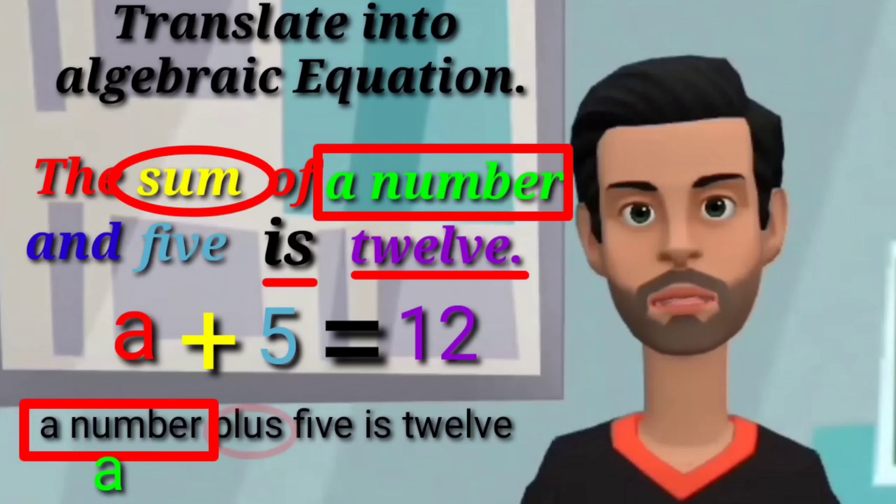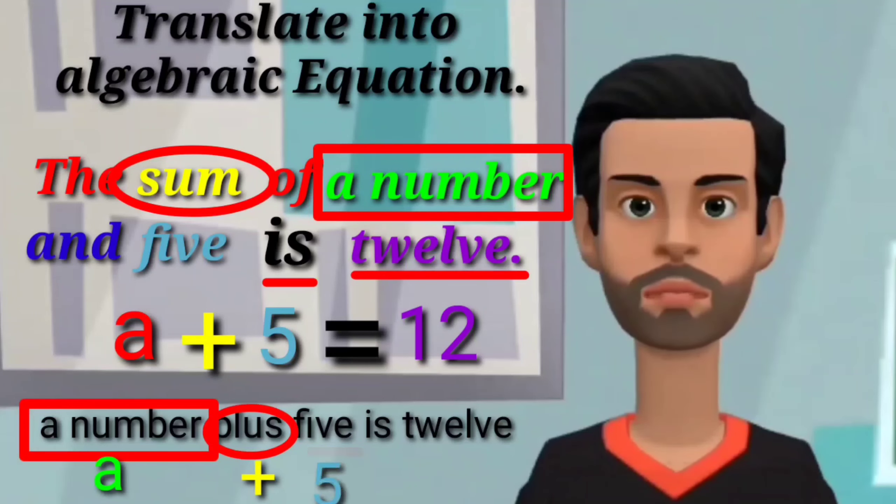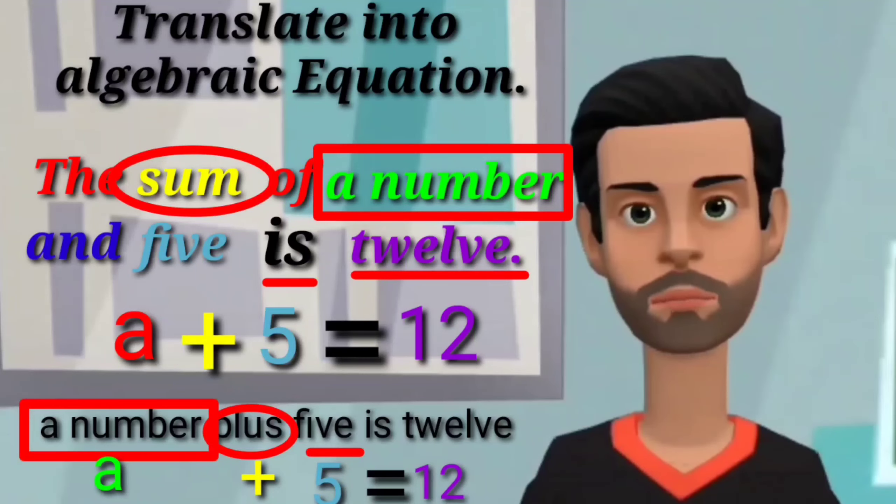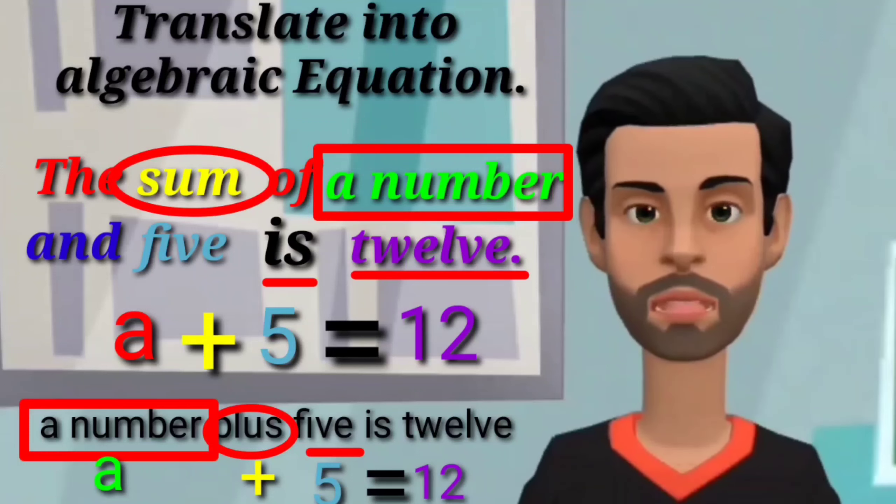N plus is plus symbol. Five is five figure. Is is equals symbol and twelve is twelve figure. To write it into an equation, copy first the variable and five followed by the equals symbol and twelve.